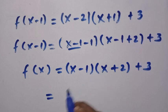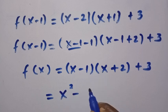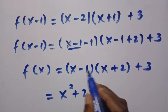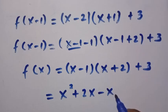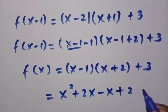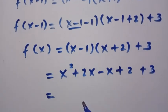By expanding this one, we have x times x, that is x squared plus x times 2, that is 2x, minus 1 times x, we have it as minus x, minus 1 times plus 2, we have it as plus 2, then plus 3 outside the bracket.